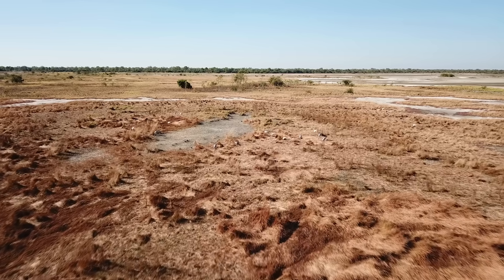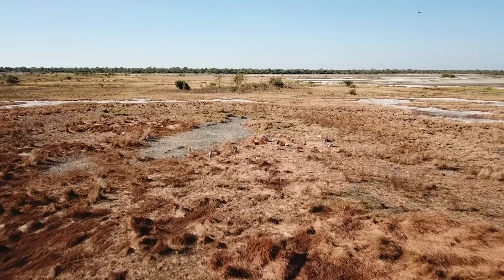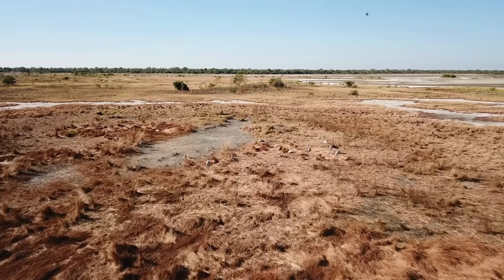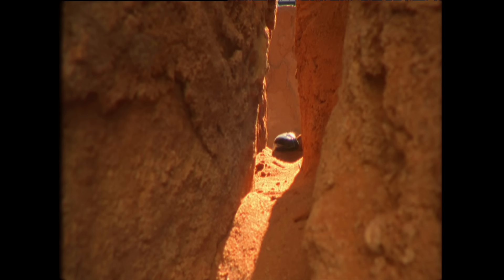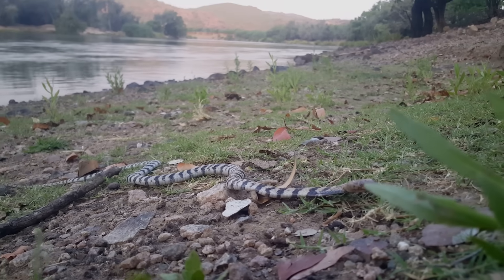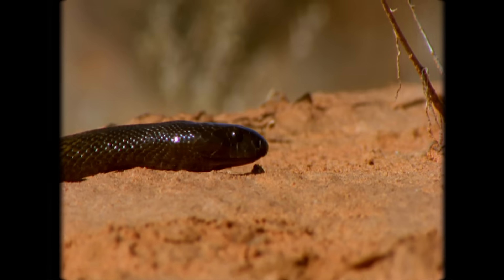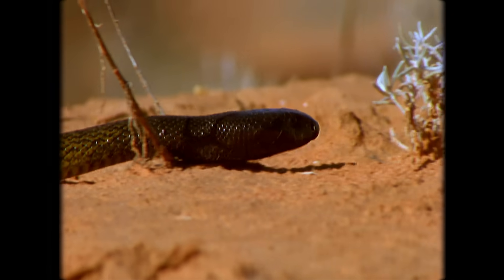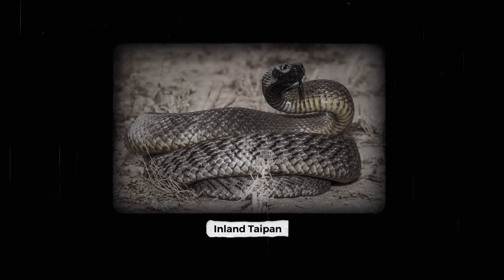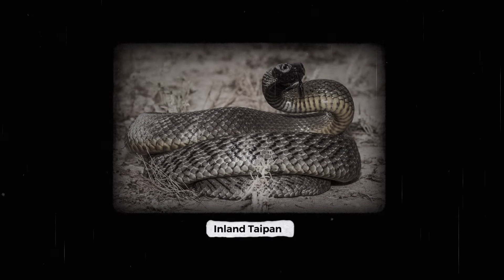If you happen to be walking out in the arid open plains of southwest Queensland, Australia, you might see the black head of a snake appearing out of a crack in the dry ground, basking in the intense heat of the Australian sun. While it might not look as immediately threatening as a cobra or a rattlesnake, this is an animal you want to avoid at all costs. It's the inland taipan, the most venomous snake in the world.